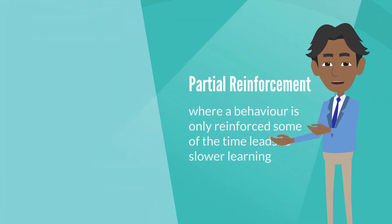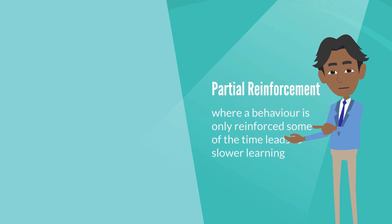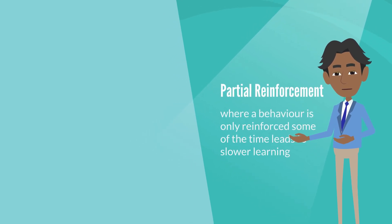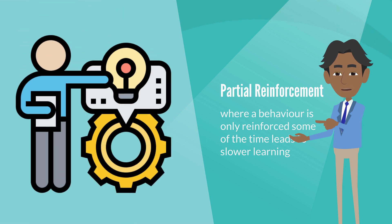On the other hand, partial reinforcement, where a behavior is only reinforced some of the time, leads to slower learning, but the behavior tends to persist even when reinforcement is no longer provided.